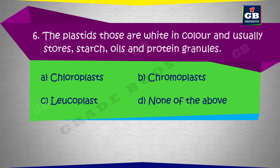The plastids that are white in colour and usually store starch, oils, and protein granules are: a) chloroplasts, b) chromoplasts, c) leukoplasts, d) none of the above.